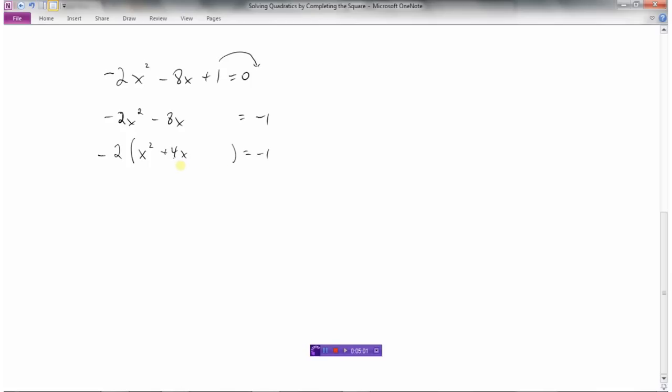Now we're ready to complete the square. So we need to take half of 4, which is 2, and square that, which is 4. And so it looks like I've just put a plus 4 to this side, but remember we have this minus 2 out in front. So everything in this bracket needs to be multiplied by minus 2.